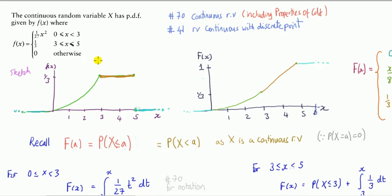I want to emphasize that x — our outcome — can take values between zero to five. Since x is continuous, we're not going to fuss about strict inequality. So 'greater than or equal to zero' could equally be replaced by 'greater than zero.' Likewise, 'less than five' could be replaced by 'less than or equal to five.' You'll see all kinds of notation in textbooks; it doesn't matter because x is continuous.